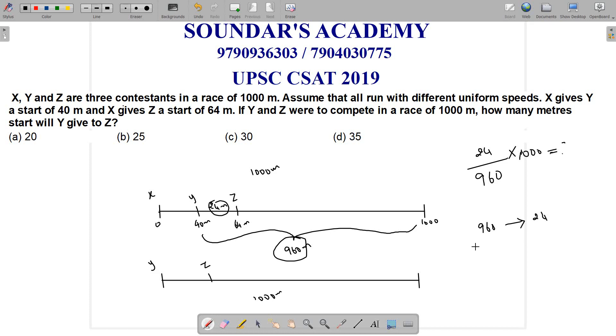Solving the proportion: 960 meters equals 24 meters, 1000 meters equals X. Cancel out the zeros, 24 and 96 cancel to give 25. So the answer is 25 meters for 1000 meters, and the answer is option B. Thank you.